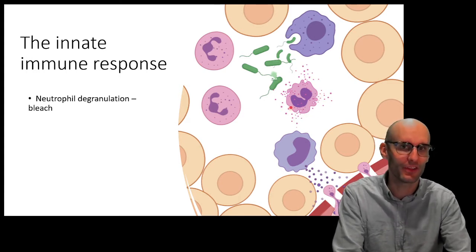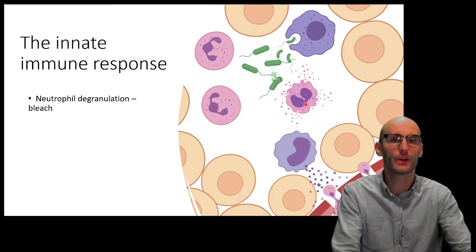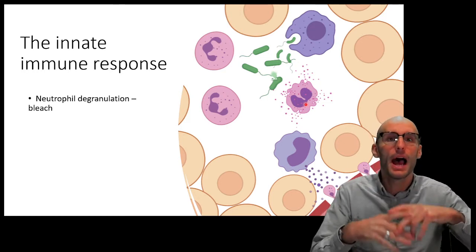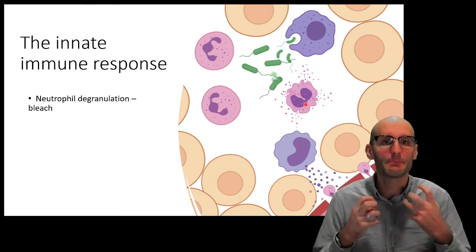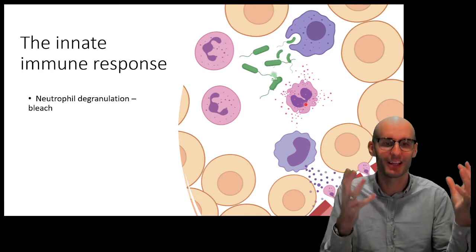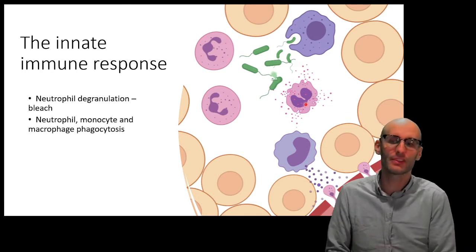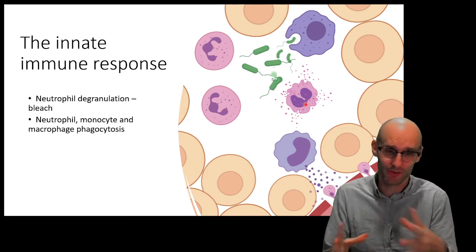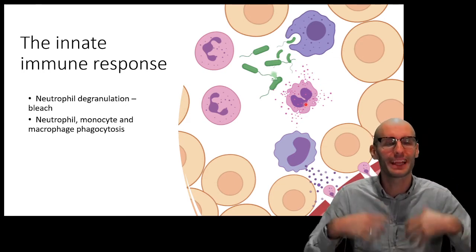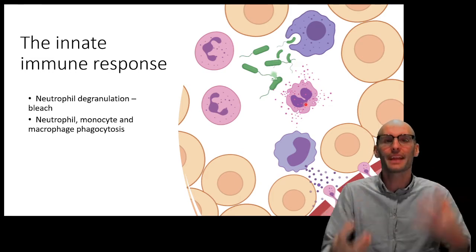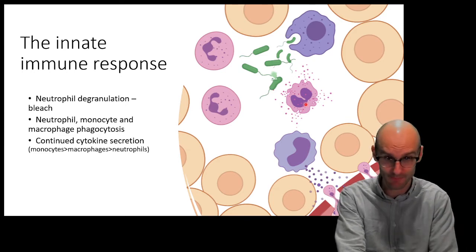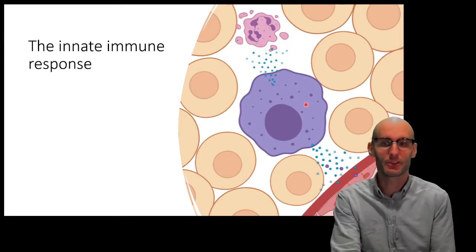Some of the main responses include degranulation of granules in cells including neutrophils, which contain cytotoxic compounds — for example, an enzyme that produces bleach. Neutrophils release an enzyme that produces bleach, which then sterilizes the area. The phagocytes — such as neutrophils, monocytes, and macrophages — begin to phagocytose, eating up damaged tissue and pathogens. They also continue cytokine secretion. That's basically the inflammatory response.